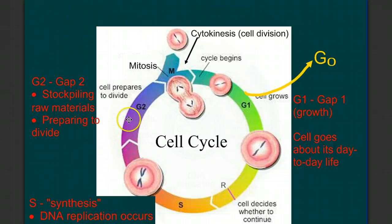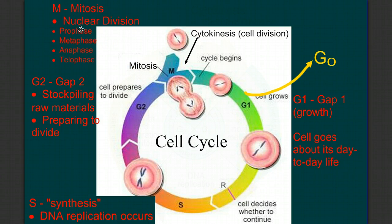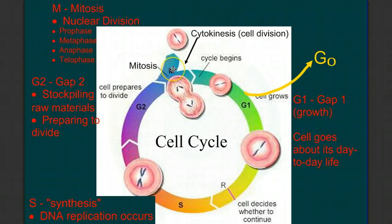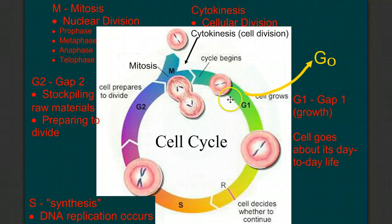Now that we have all the materials we need to divide and we've doubled the amount of genetic material, it's time for mitosis, or nuclear division, where we divide up this genetic material into two equal nuclei. And most of the time, following mitosis, we have cytokinesis, or cell division. Now in the analogy we've made throughout the course, we talked about the cell being a factory.